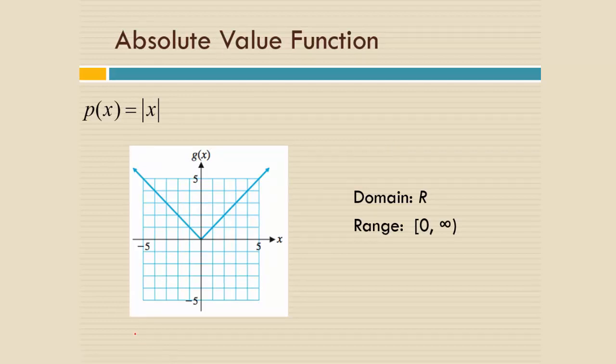This is the absolute value function. Absolute value takes any number you plug into it and makes it positive. So on the right-hand side, when we plug in, say, 0, 1, 2, you just get the identity function.